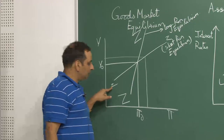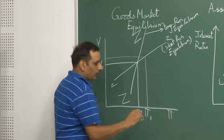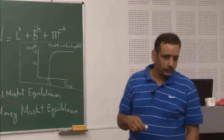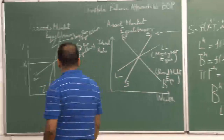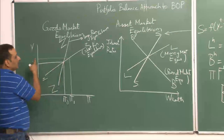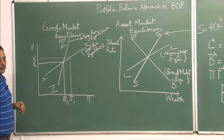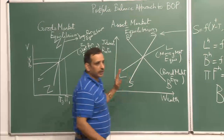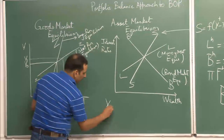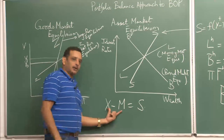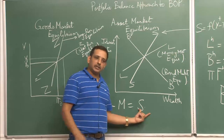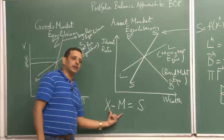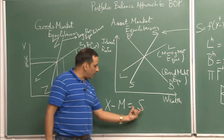If the economy is at income y0 and exchange rate pi0, and your currency depreciates, the small zz curve shows that depreciation leads to an increase in incomes. Why? Because depreciation of the currency improves the current account balance if the Marshall-Lerner-Robinson (MLR) condition holds. It improves the current account balance, which in turn leads to an increase in incomes, and you have positive savings since x minus m equals s.